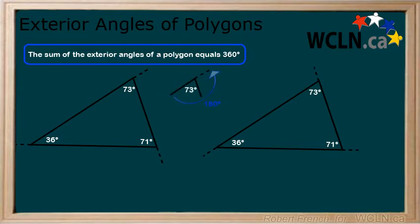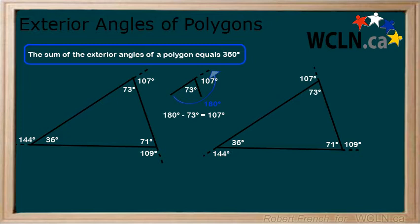Remembering back, we know that angles on a line add to 180 degrees. So here, we subtract our interior angles from 180 degrees to get our exterior angle. When we add together our exterior angles of 144, 107, and 109 degrees, we get 360 degrees.